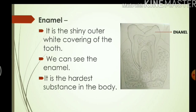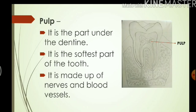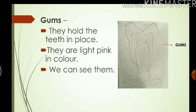Enamel is the shiny outer white covering of the tooth. It is the hardest substance in the body. The white shiny part of the teeth that you can see is your enamel. Dentine is the layer under the enamel — it is usually yellow in color and we cannot see it. Pulp is the part under the dentine. It is the softest part of the tooth and is made up of nerves and blood vessels. Gums hold the teeth in place. They are light pink in color and we can see them.